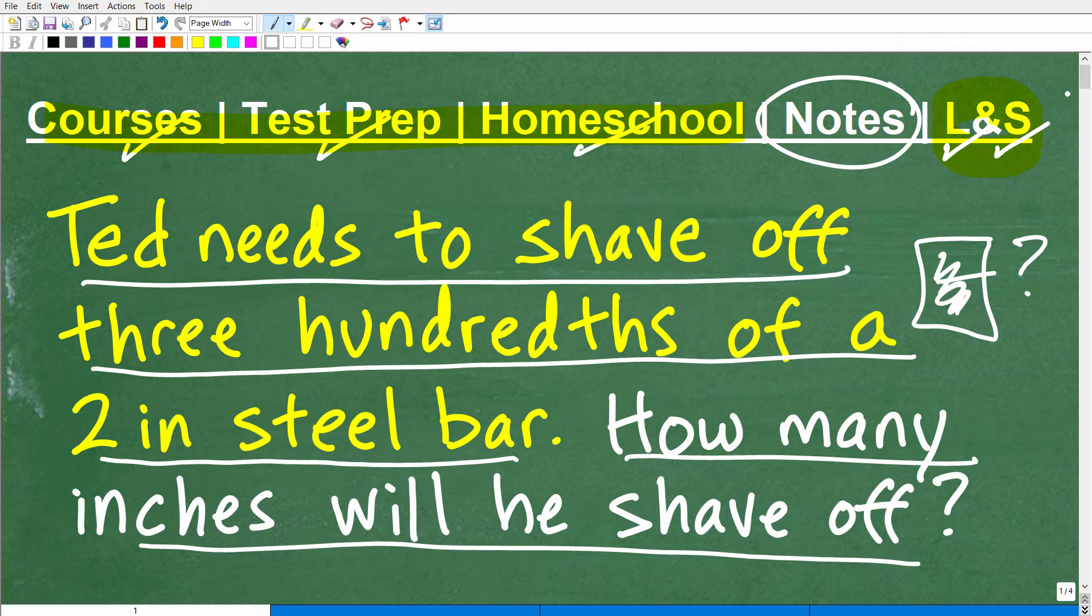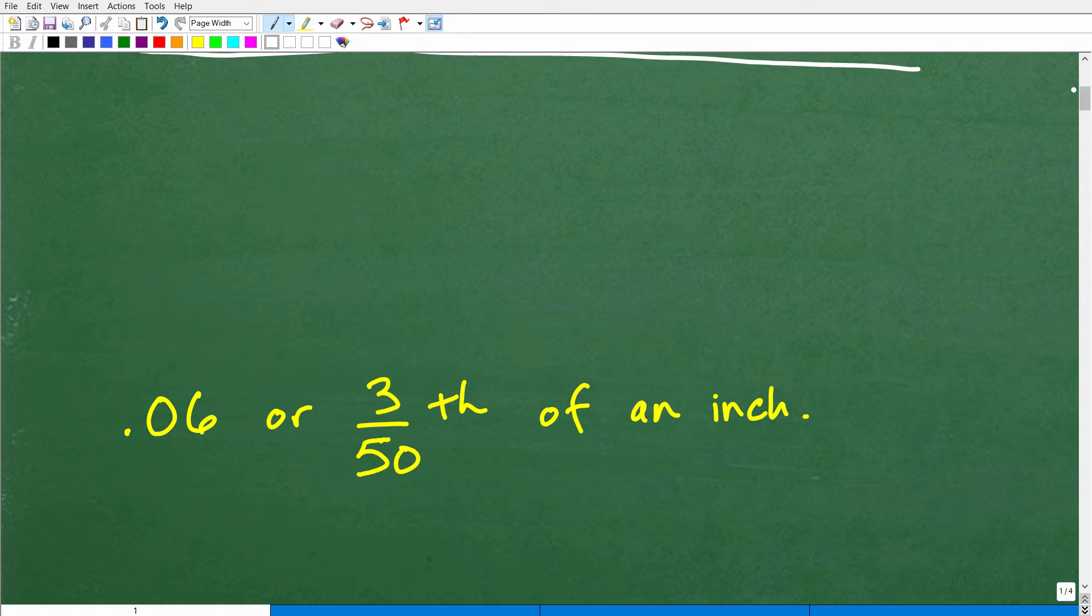So Ted needs to shave off three hundredths of a two-inch steel bar. How many inches will he need to shave off? Well, here is the answer. 0.06 or three-fiftieths of an inch.